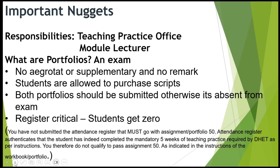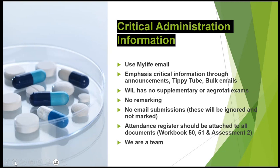The register is critical. If the student does not include the register — which is proof that you have been to a school — you receive a zero. The attendance register that must accompany your assessments authenticates that you have indeed completed the mandatory five weeks of teaching practice required by DHET. You therefore do not qualify to pass Assessment 50 or 51 if you do not include the register.